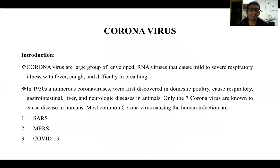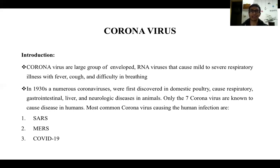Coronavirus is a large group of RNA viruses, which were first discovered in the 1930s. There are several species or strains of coronavirus. Among the different strains, only seven strains are responsible for infections in human beings and animals. I will particularly discuss three species of coronavirus that have caused human infections and are known worldwide.